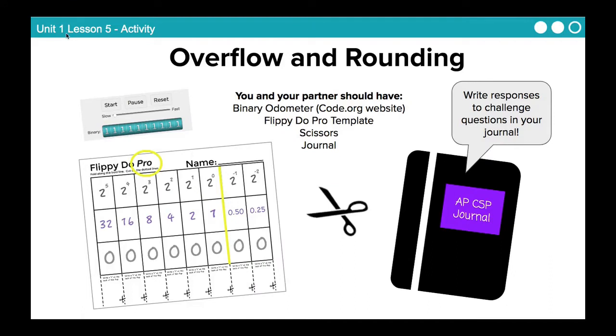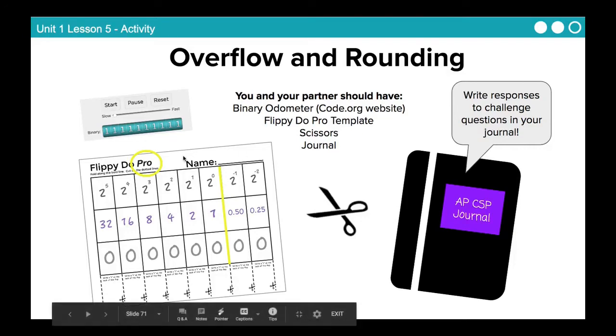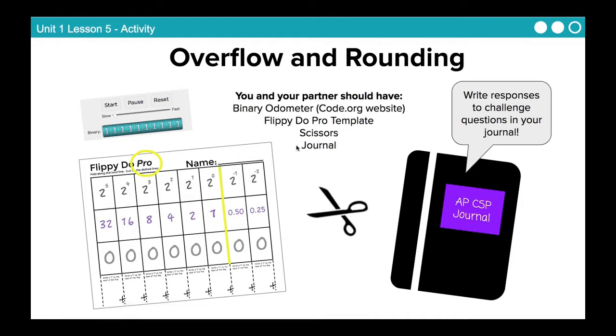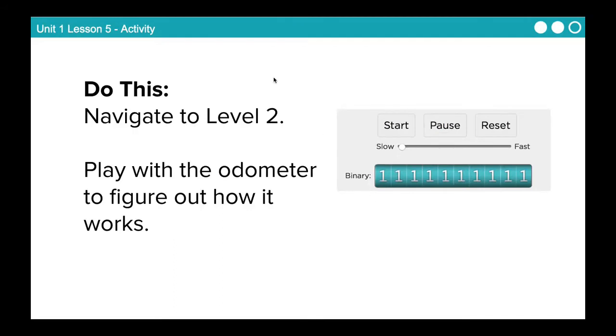So here's our activity, first activity for the day. For this activity, you need the binary odometer, which is on the code.org website, which I will pull up on the screen here in just a moment. The FlippyDoo Pro template, which is linked on Google Classroom. If you do not have access to a printer at home, just copy this template down onto a sheet of paper, scissors to finish off your FlippyDoo, and your journal.